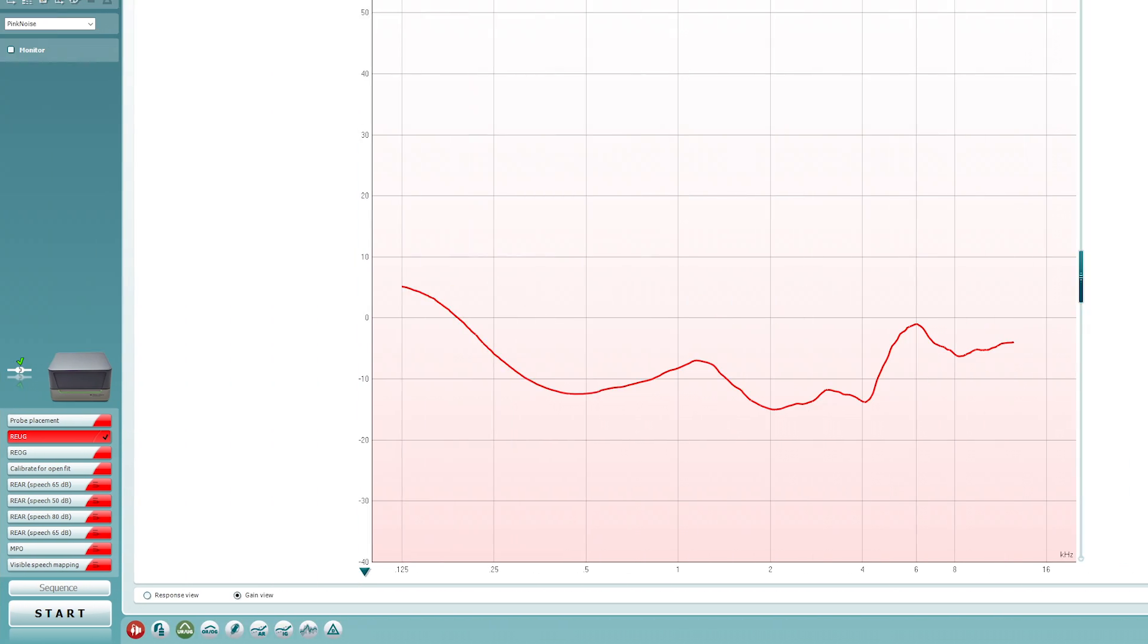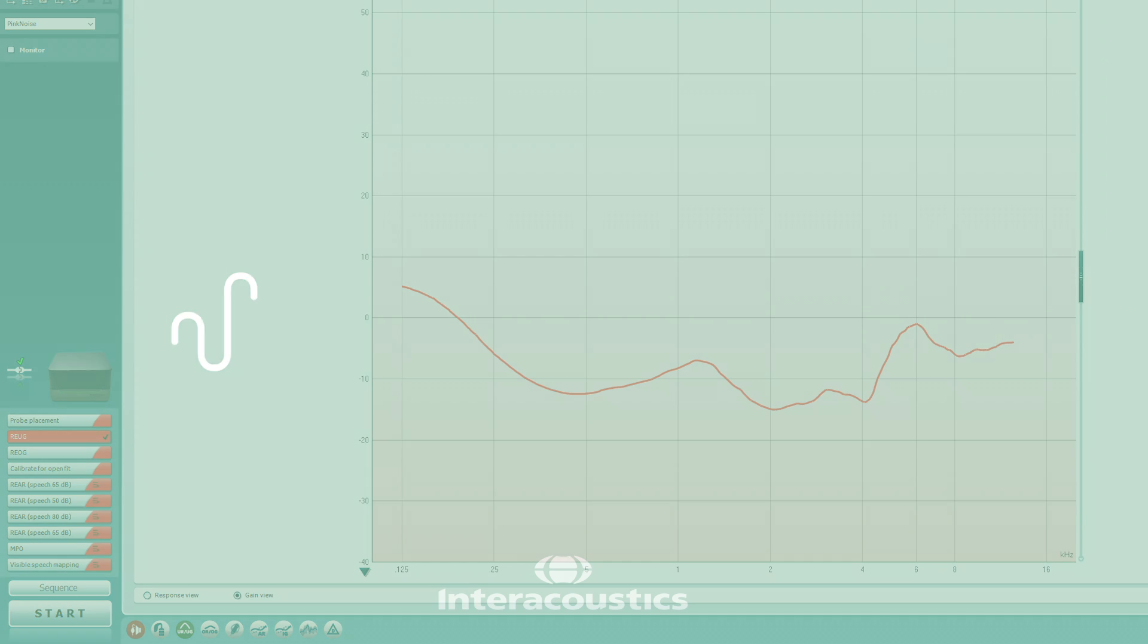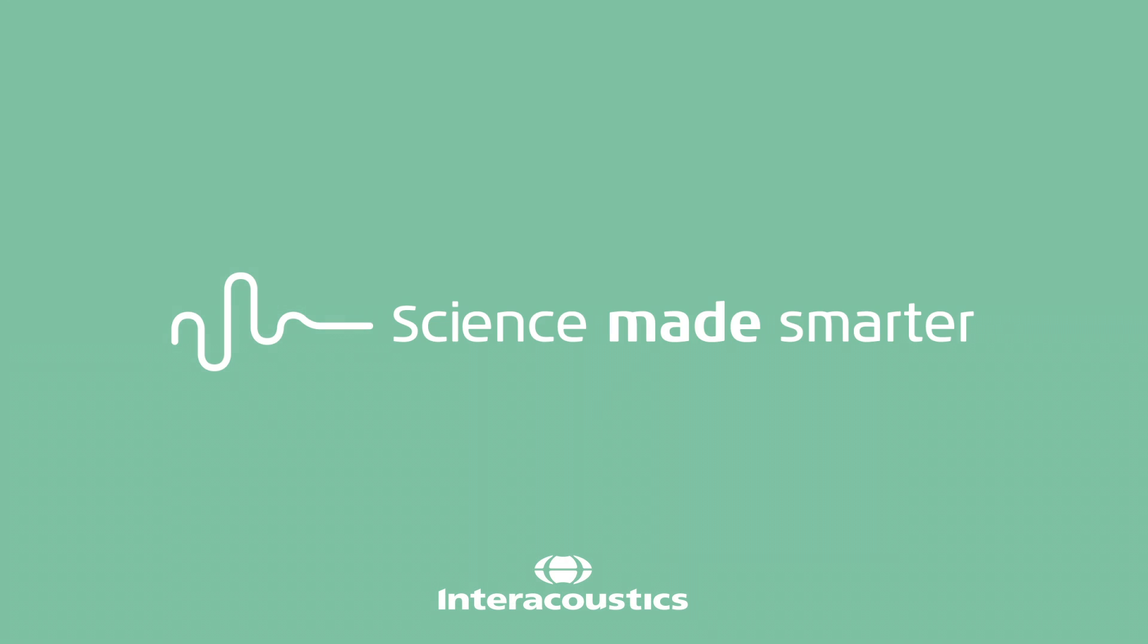If the probe tube is blocked or inserted incorrectly, the REUG curve will look obscure and be dominated by negative values.